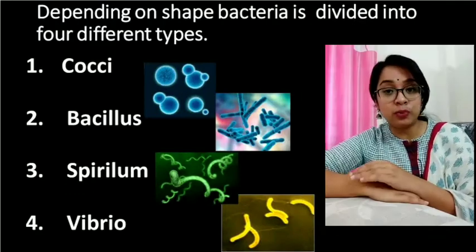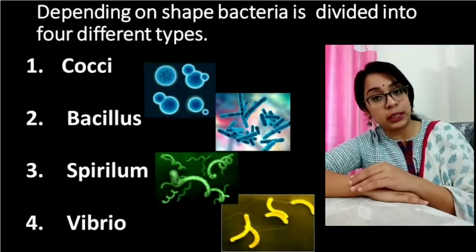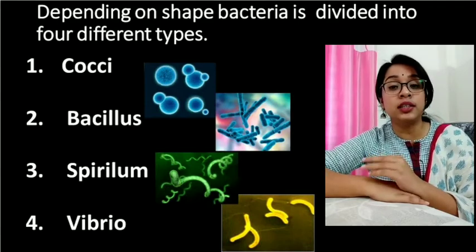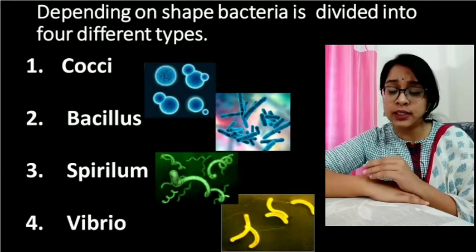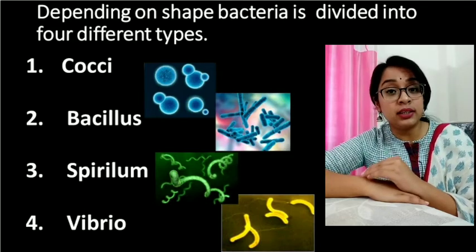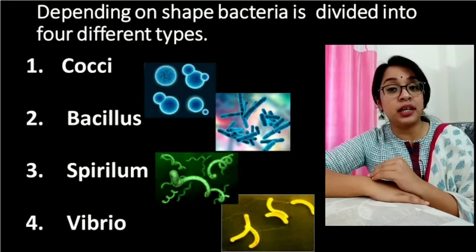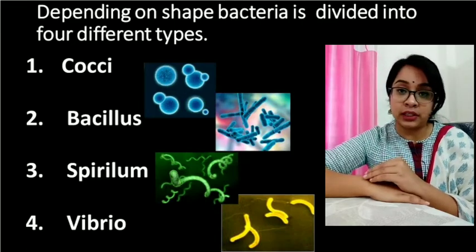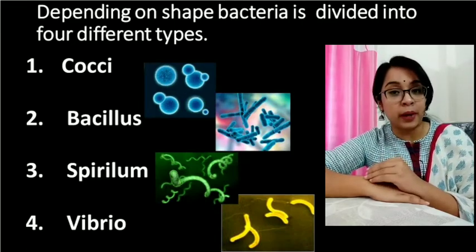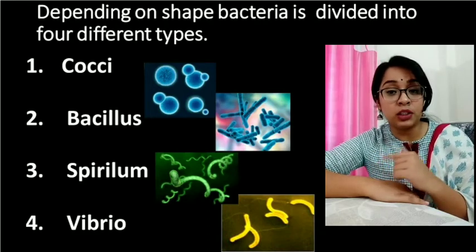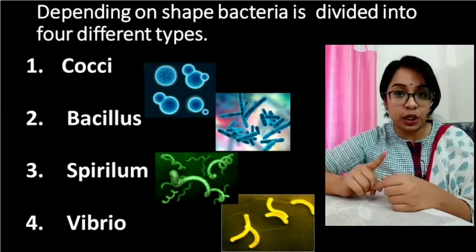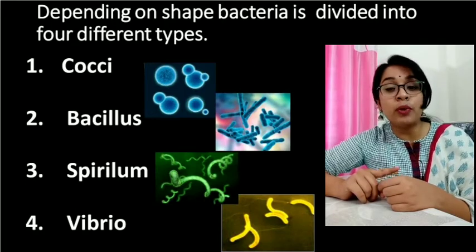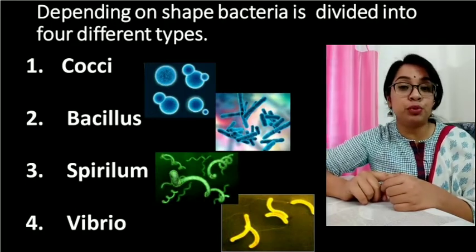Depending upon the shape of the bacteria, they are of four types. First is cocci — the shape of the bacteria is spherical. Next is bacillus — the shape is rod-like, and this is one of the most common types of bacteria. Third is spirillum — the shape is spiral, meaning an entangled shape. And the last one is vibrio — vibrio bacteria are comma-shaped bacteria.